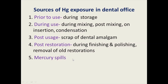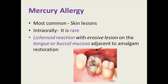Mercury allergy is most commonly seen as a skin lesion; intraorally it is rare. It is seen as a lichenoid reaction with erosive lesions on the tongue or buccal mucosa adjacent to the amalgam restoration. The best treatment is to replace the silver amalgam with another restorative material.